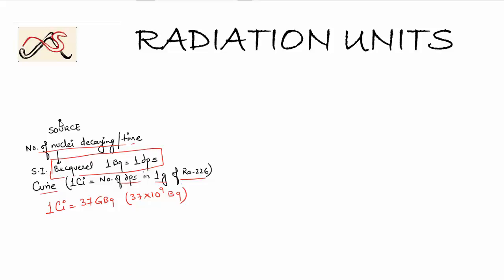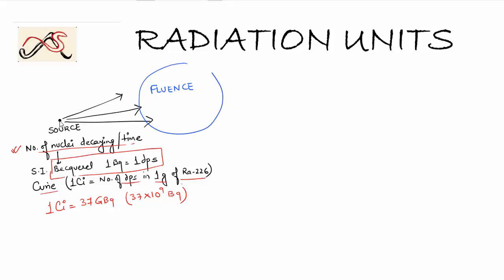Having quantified radioactivity emitted from a source, the next step is that this radioactivity gets transferred into the air — say in the form of gamma rays. How much radiation is coming out is given by something called Fluence. Fluence tells you the amount of particles or energy that passes through a medium, given as the number of particles incident per unit area of a sphere.